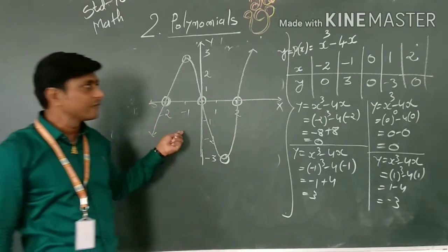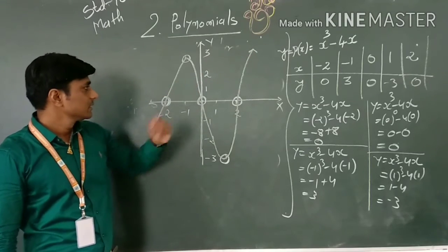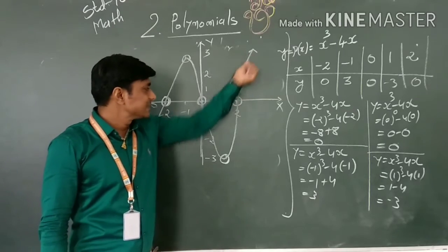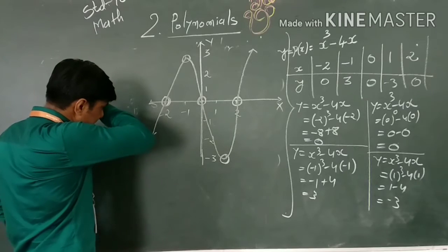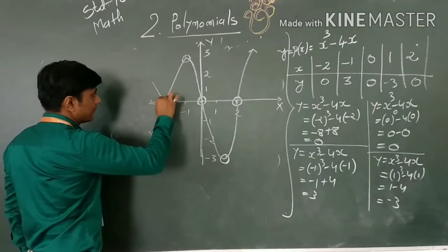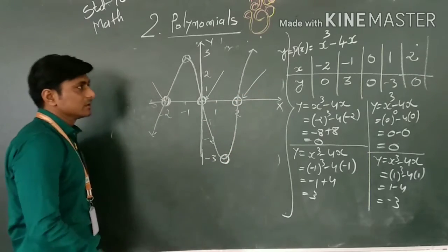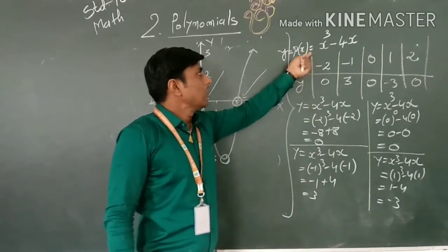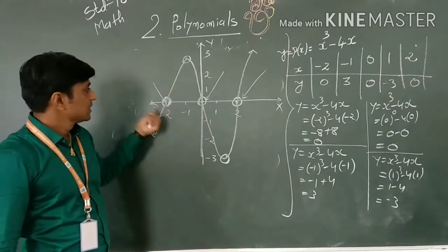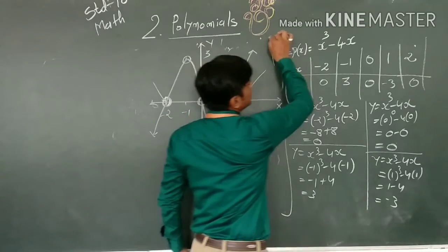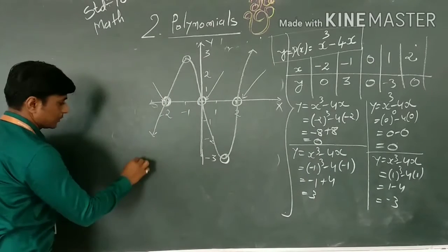Plotting all these points, the graph crosses the x-axis at the points 1, 2, and 3 — meaning at x = −2, x = 0, and x = 2. Therefore, there are 3 zeros of this polynomial.